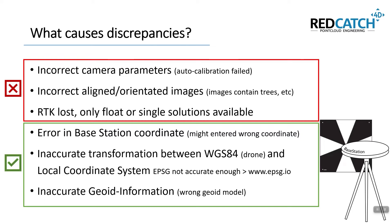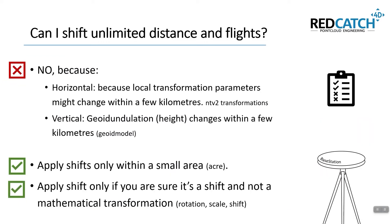There are limits. You can't shift by a couple of kilometers — only a few meters are allowed. And if you have a large survey area where the geoid will change, you might run into trouble because we can only shift a constant value in height. Apply shifts only within a small area, and apply the shift only if you're sure it's a shift and not a mathematical transformation such as a rotation. Be aware of this.